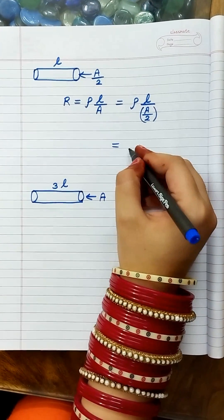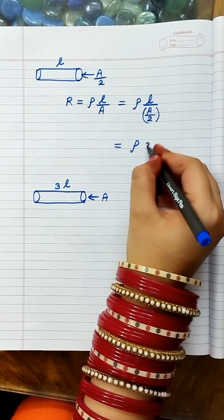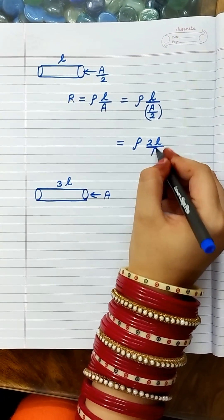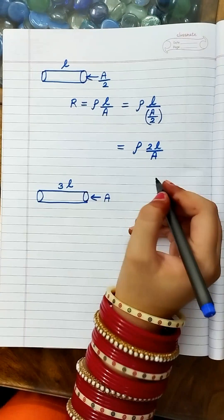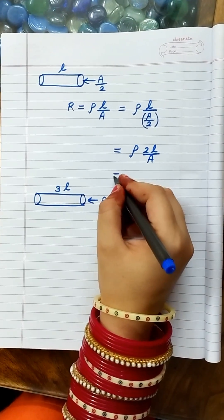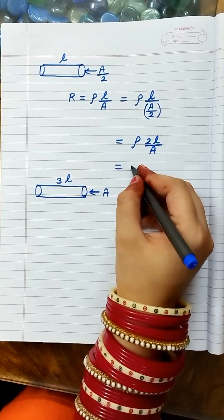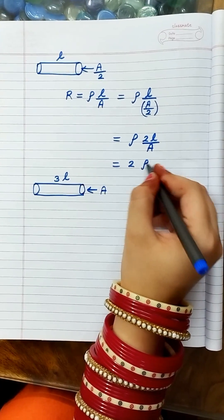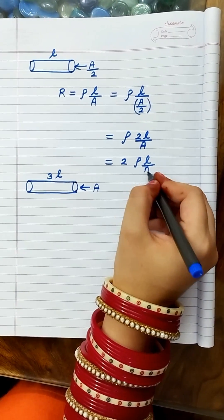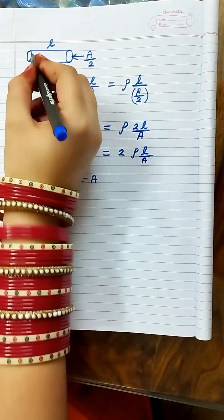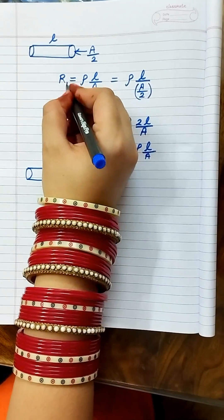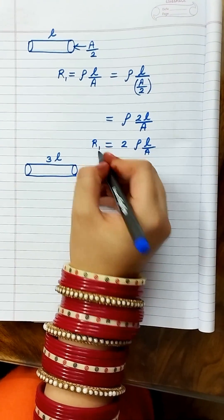When we solve it, we get ρ2L/A. We can rewrite this by factoring out the 2, so it becomes 2ρL/A. So for conductor 1, the resistance R1 is 2ρL/A.